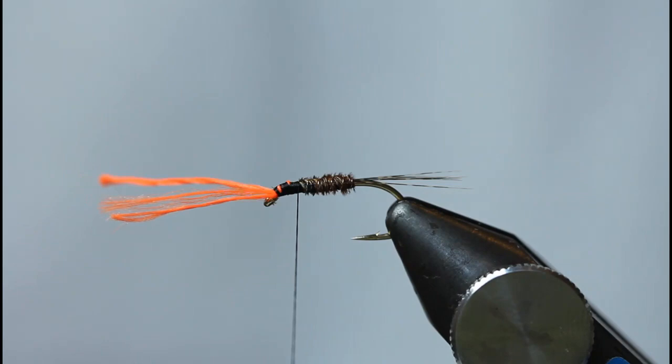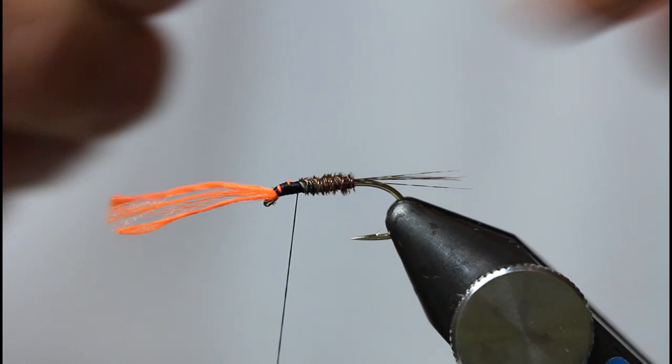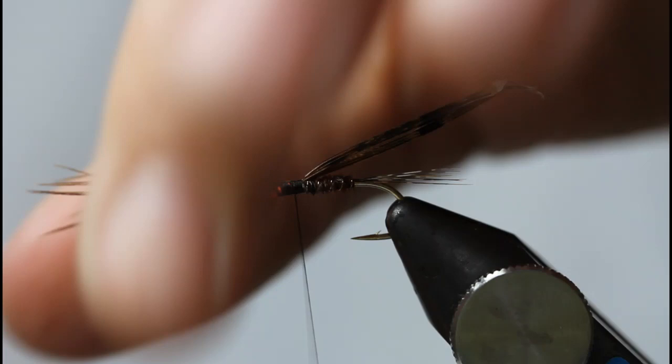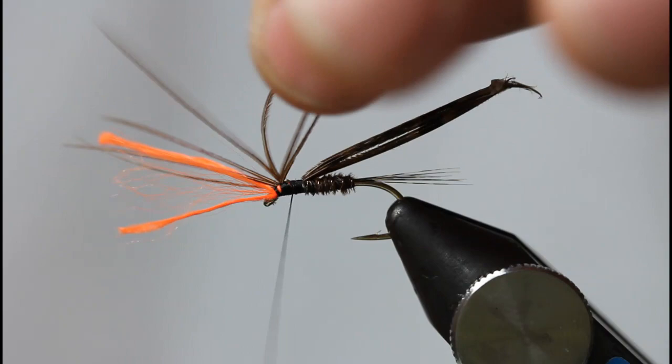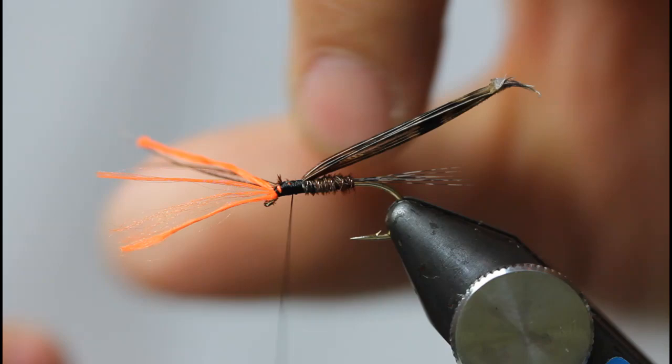Coming in with my pheasant tail, I'm taking a wider section, probably eight to ten fibers, because I want to create a thorax area. Clutch that in—this is going to be your thorax cover. Wind down to the body, then in with the scissors to separate everything and take these tips away. Get all that out of the way. Nice and tidy.